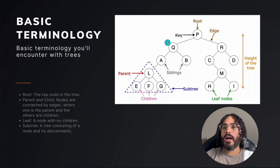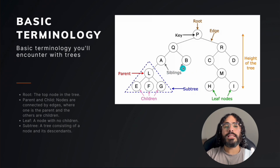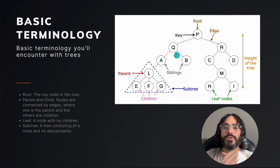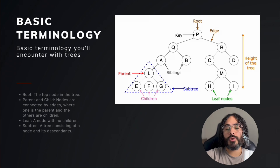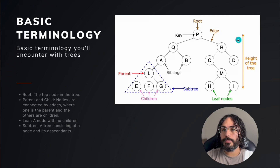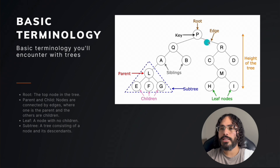To recap the terminology: every node has a key. Nodes are connected by edges. We have parent nodes at the top and children below. Siblings are nodes at the same level — for example, A and B are siblings because they're both children of Q. We also have the concept of the height of the tree — the number of levels. By visually inspecting this tree we count five levels, so the height of the tree is five.